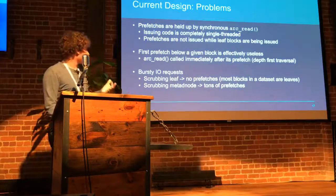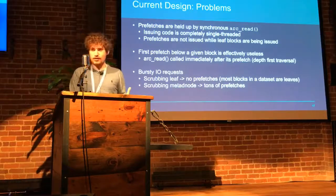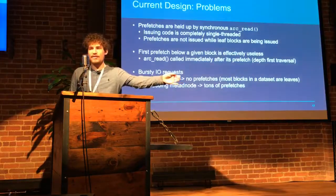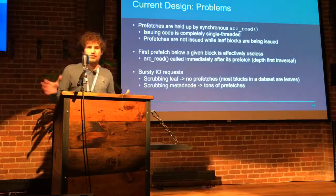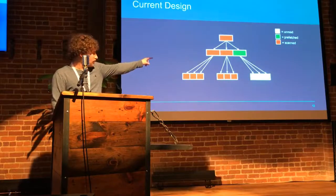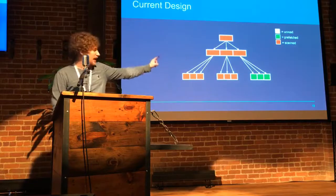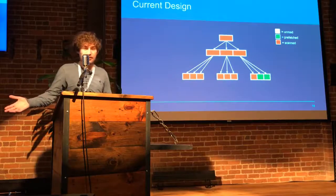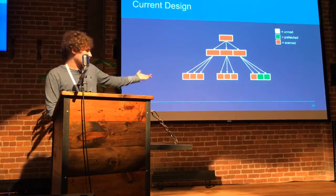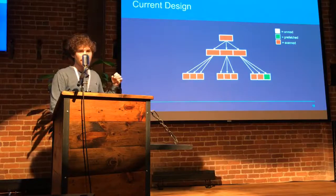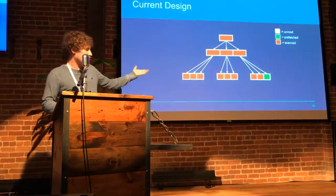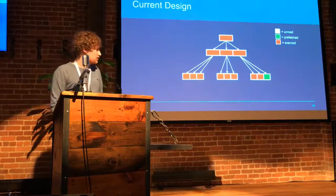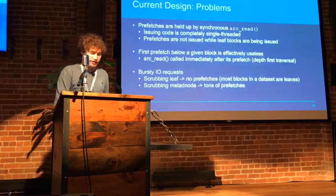The next problem is that the first prefetch below a given block is effectively kind of useless. We're going to pretend this is a completely ideal case where you run a prefetch and it starts an IO and immediately returns — effectively zero time compared to disk time. So when this happens, we scan a block and immediately start prefetching the blocks below it, and then we read that block. That prefetch is effectively useless because we immediately go and read all of the copies of that block anyway. Everything after that we get some performance gains on, but in this case we didn't — because it's leaf blocks and we had to read all of the copies anyway. So that's not great; we're issuing prefetches but they're not helping us as much as they could.